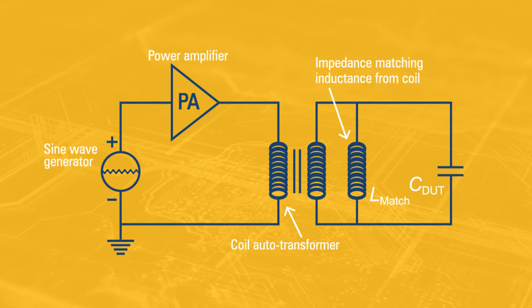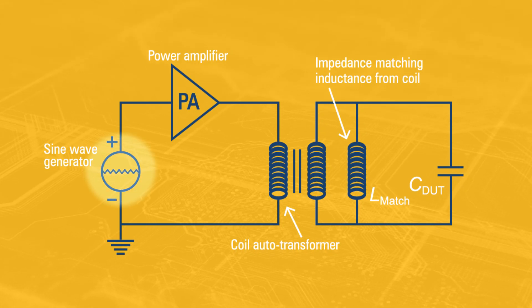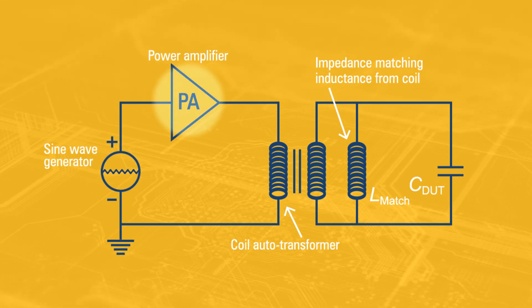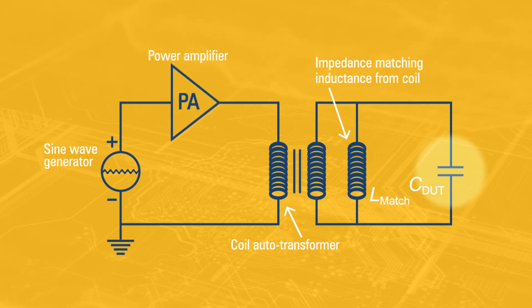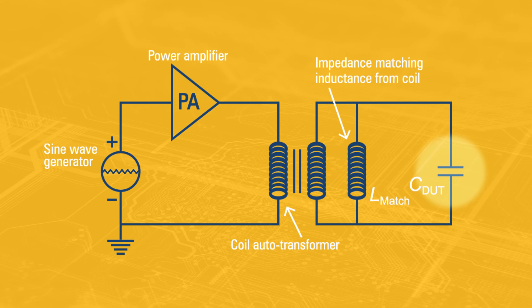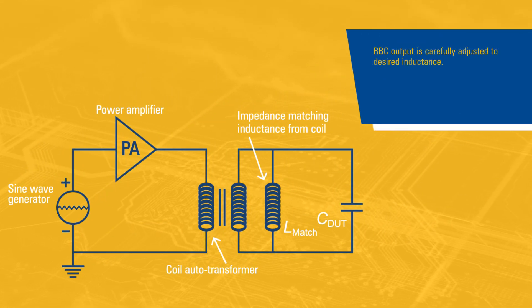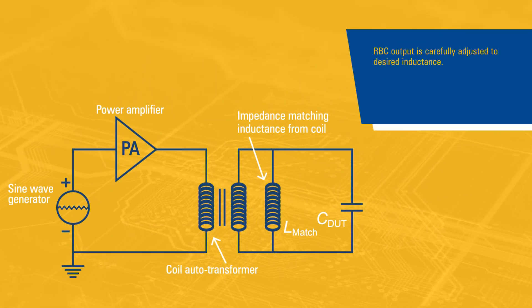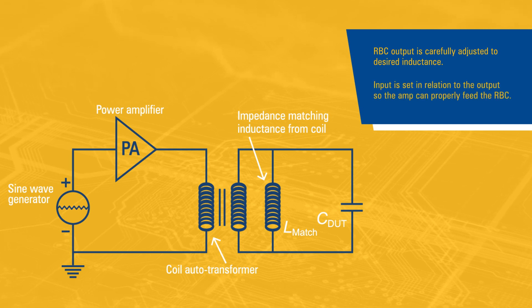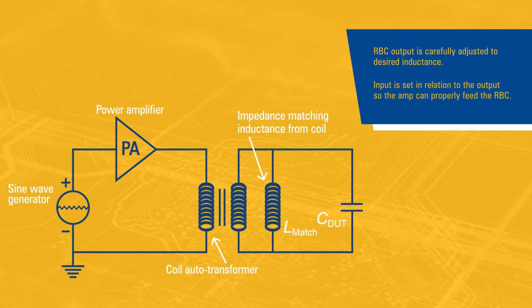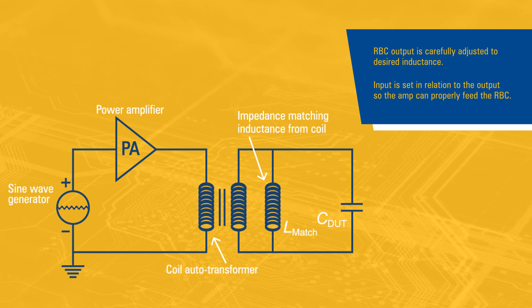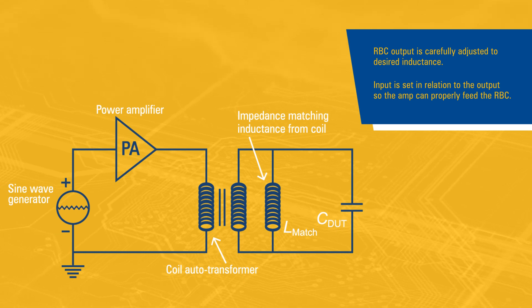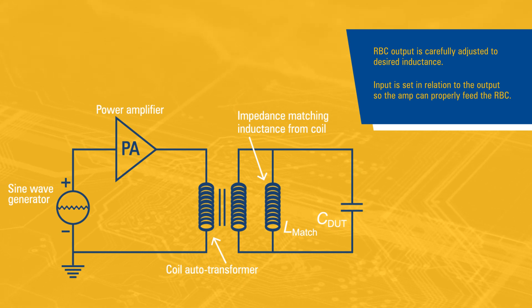This is how our setup works. First, we generate a sine wave at the desired frequency and feed it into a power amplifier that's connected to the input of the RBC. The output of the RBC is connected to the capacitor under test. The output of the RBC is carefully adjusted to get the inductance we want, and the input is placed in relation to the output so the power amplifier can properly feed the RBC and avoid those pesky reflections.